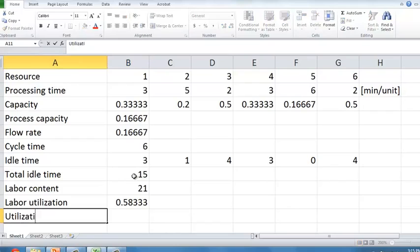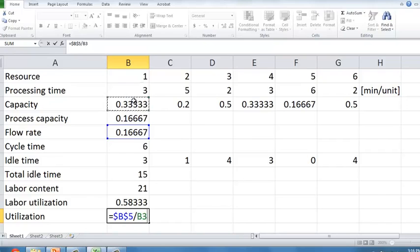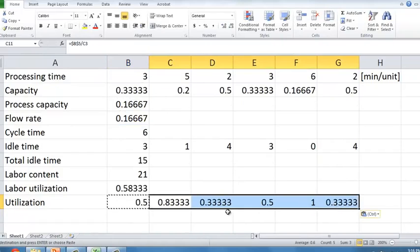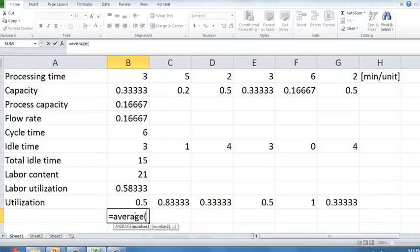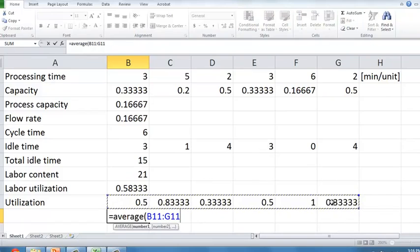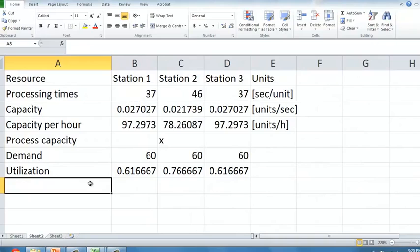Note the following, let's quickly compute the utilization of each of the six steps in the process. Utilization, remember, is the flow rate divided by the capacity. You notice 100% utilization at the bottleneck, which I hope is intuitive. We can then go ahead and we can average the labor utilization of the six resources. And, voila, we also see a 58.3%.